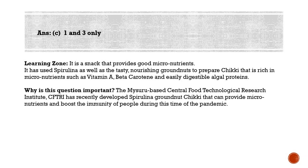Spirulina is used as a dietary supplement or whole food, and also as a feed supplement in aquaculture, aquarium, and poultry industries. Just like plants, cyanobacteria can produce energy from sunlight via photosynthesis. Note that the Spirulina Groundnut Chiki has no GI tag. What makes it significant is spirulina — a photosynthetic bacteria suitable for human consumption.